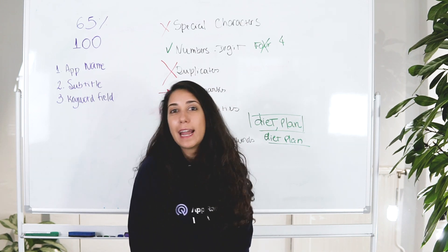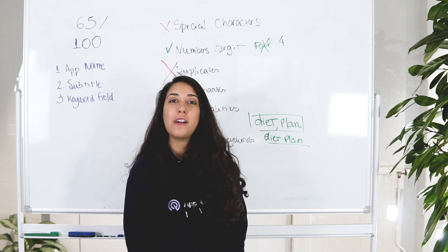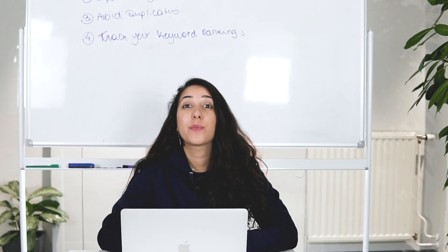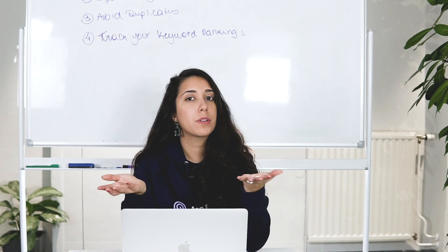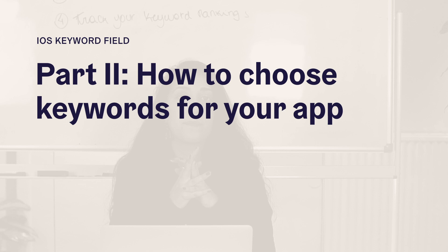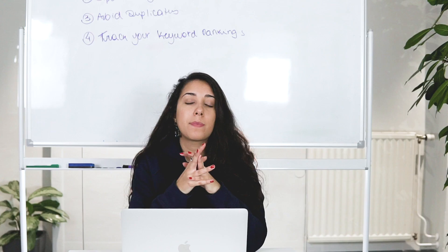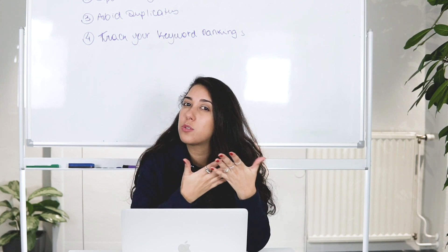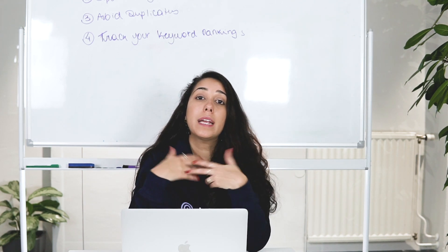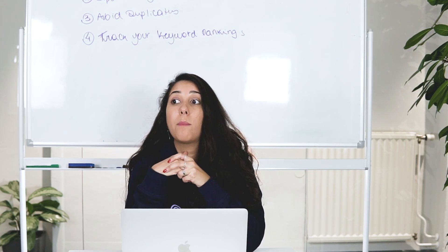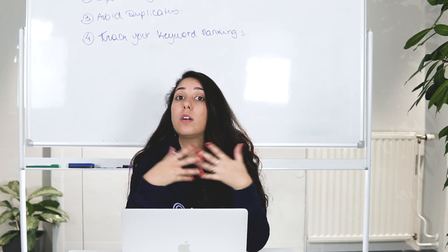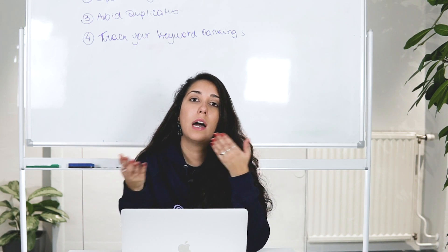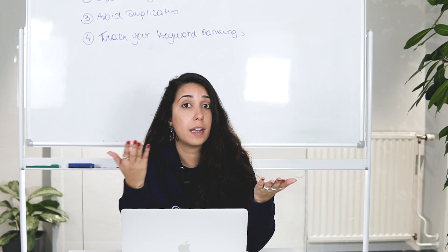That's it for part one. Let's move on to part two: how to find keywords for your app. First things first, think about which keywords you'd like to rank for. You can brainstorm your features, brainstorm how people describe your app, and check your app reviews for keyword ideas. You can also use tools to figure out how to play around with keywords and find new ones.